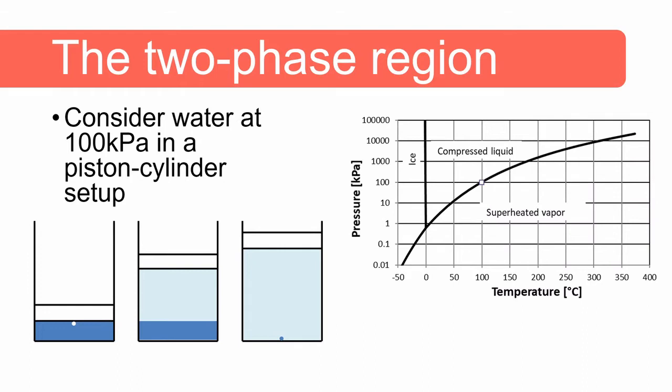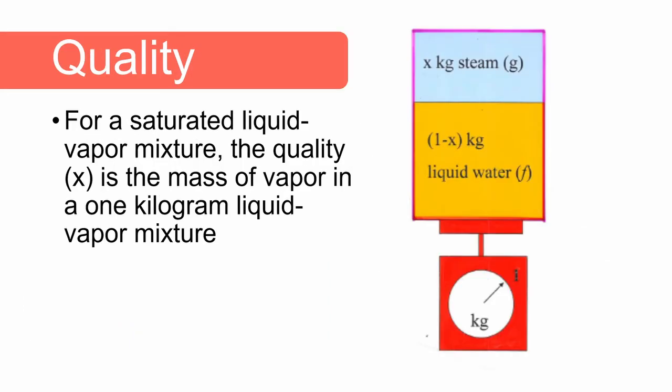In order to quantify the quantity saturated liquid and the quantity saturated vapor, we make use of the concept of quality. For a saturated liquid vapor mixture, the quality, which is denoted by x, is the mass of vapor in a one kilogram liquid vapor mixture.